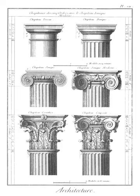Araeostyle: an architectural term applied to a colonnade in which the intercolumniation is alternately wide and narrow.